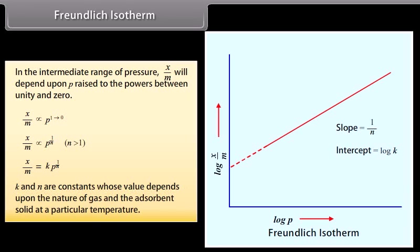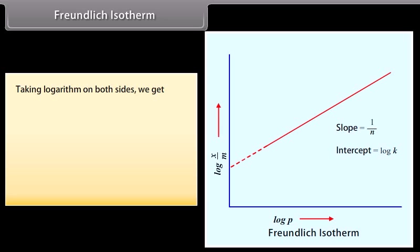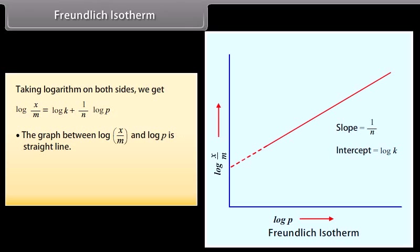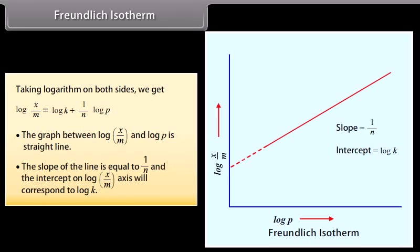K and n are constants whose values depend upon the nature of the gas and the adsorbent solid at a particular temperature. Taking logarithm on both sides: log(x/m) = log k + (1/n)·log p. The graph between log(x/m) and log p is a straight line; the slope equals 1/n and the intercept on the log(x/m) axis corresponds to log k.